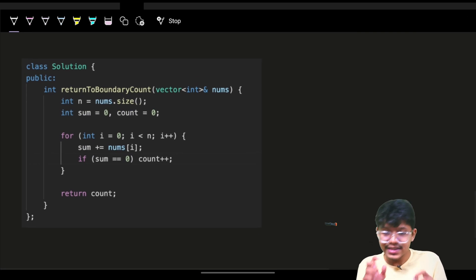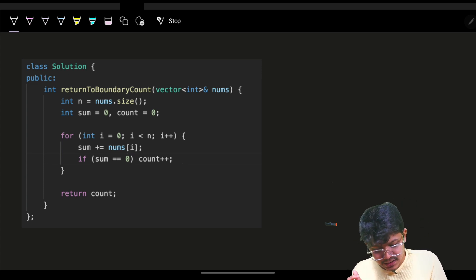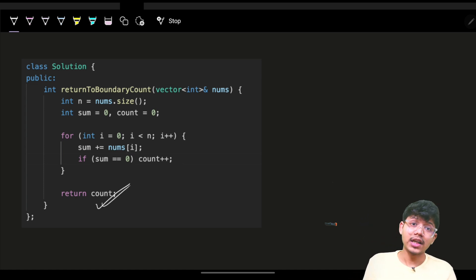I will do the exact same thing. I will just keep track of the sum. The number of times my sum becomes zero, I will increase my answer. Answer is the count of number of times I am reaching the boundary. Boundaries are zero for me because I am starting from zero itself. Thus, ultimately, you can just simply return the count.